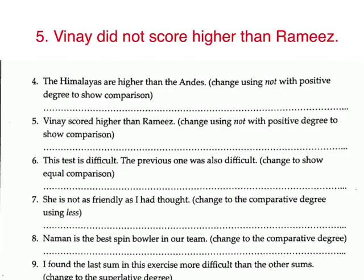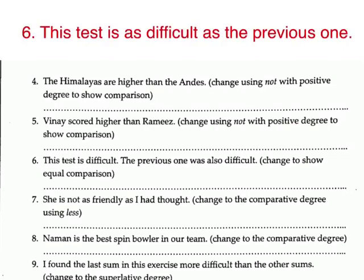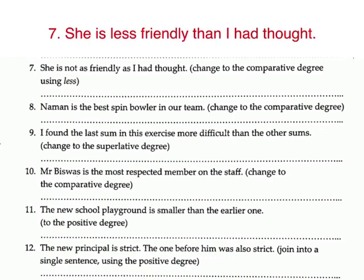6. 'This test is difficult. The previous one was also difficult' — change to show equal comparison. Answer: This test is as difficult as the previous one. 7. 'She is not as friendly as I had thought' — change to comparative degree using 'less'. Answer: She is less friendly than I had thought.